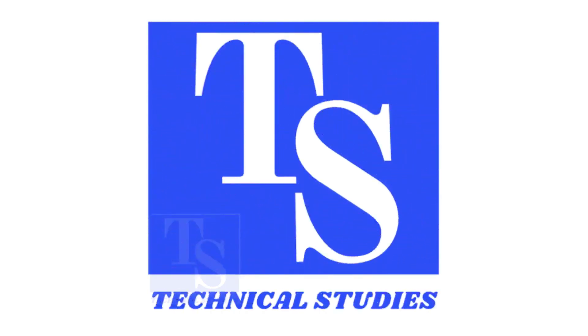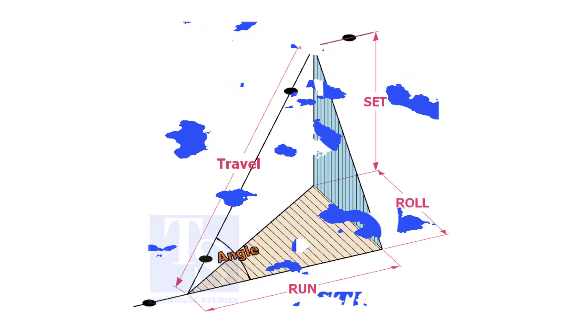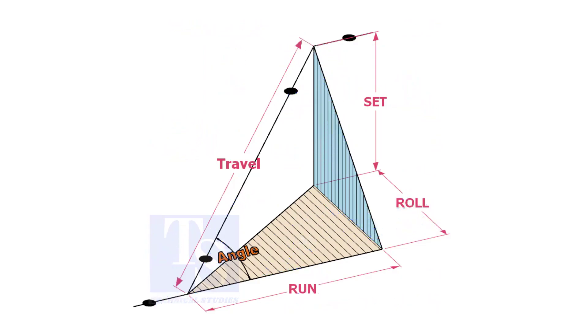Welcome to Technical Studies. In a piping drawing of a double rolled offset, usually the dimensions of the run, set and roll are given.